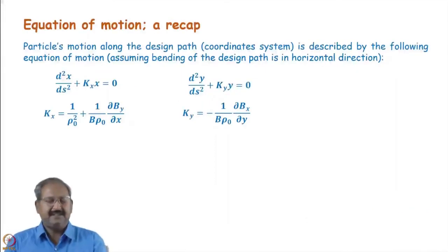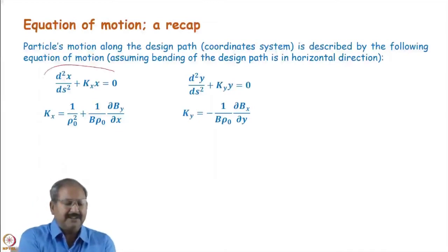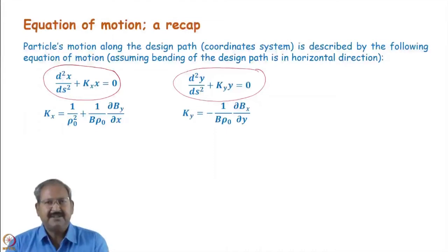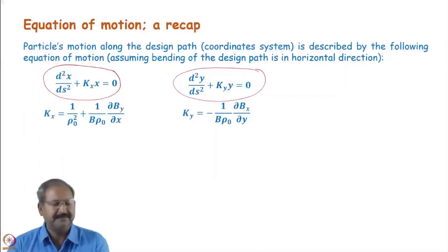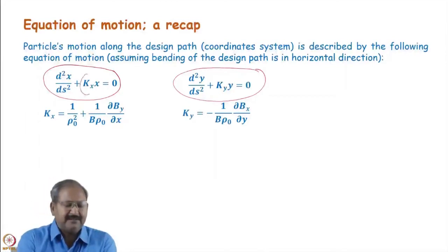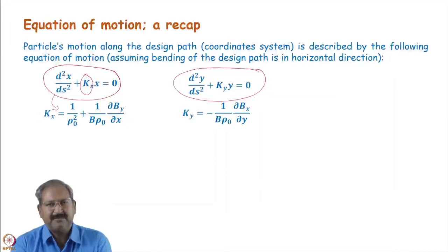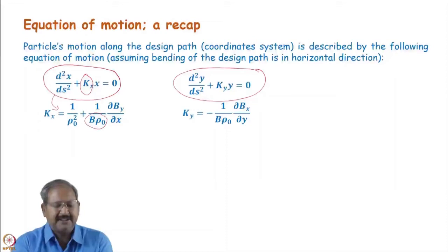This is the equation of motion in the horizontal plane, and this is the equation of motion in the vertical plane. These equations are much like the equation of a simple harmonic oscillator, however there are certain differences. Here, Kx is basically 1/ρ² plus the gradient of the magnetic field normalized by the magnetic rigidity.